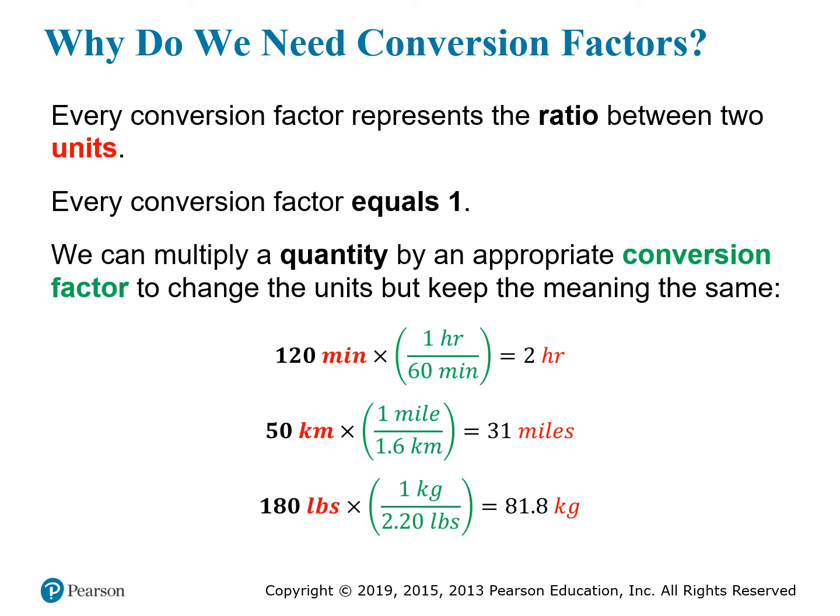So what's the point of developing these conversion factors for a relationship? Well, remember, every conversion factor represents the ratio between the two units you're dealing with, and every conversion factor equals 1. The interesting thing about the number 1 is that you can multiply any number by 1 and the number remains the same. Since we now have a different expression of 1 which relates two units together, we can multiply a measurement with a unit by one of these conversion factors and transform the unit without transforming the meaning of the measurement.